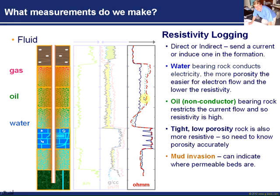So we see this nice big separation which infers that originally the resistivity was high with oil, but we've flushed that oil away with a conductive mud filtrate. This gives us a good indication that the oil is moveable, and therefore hints at some of the effects of permeability. So we get an extra dimension with the different depths of investigation away from the wellbore - we can tell things about how the fluid is moved as well as what the fluid type is.